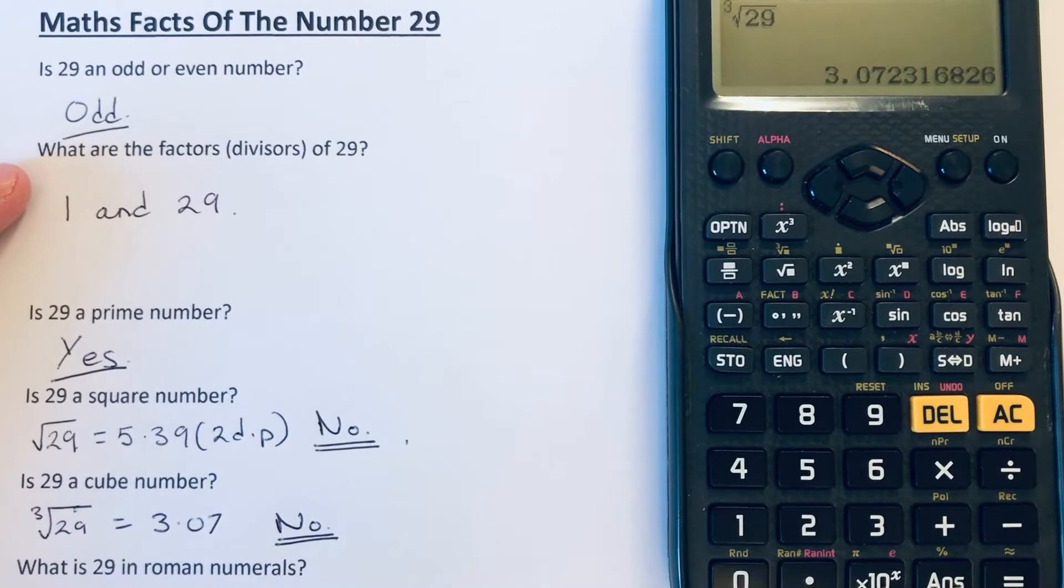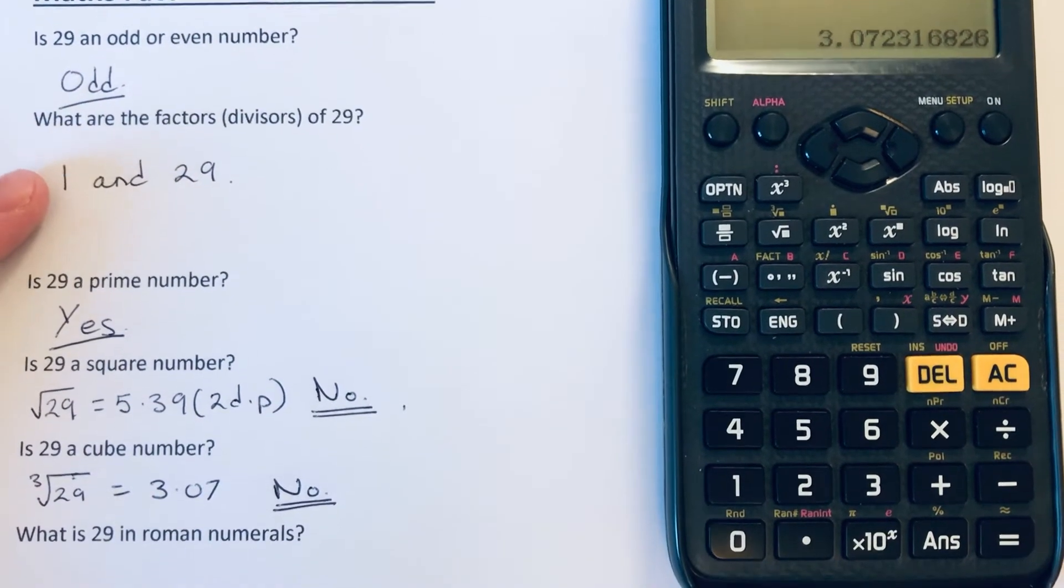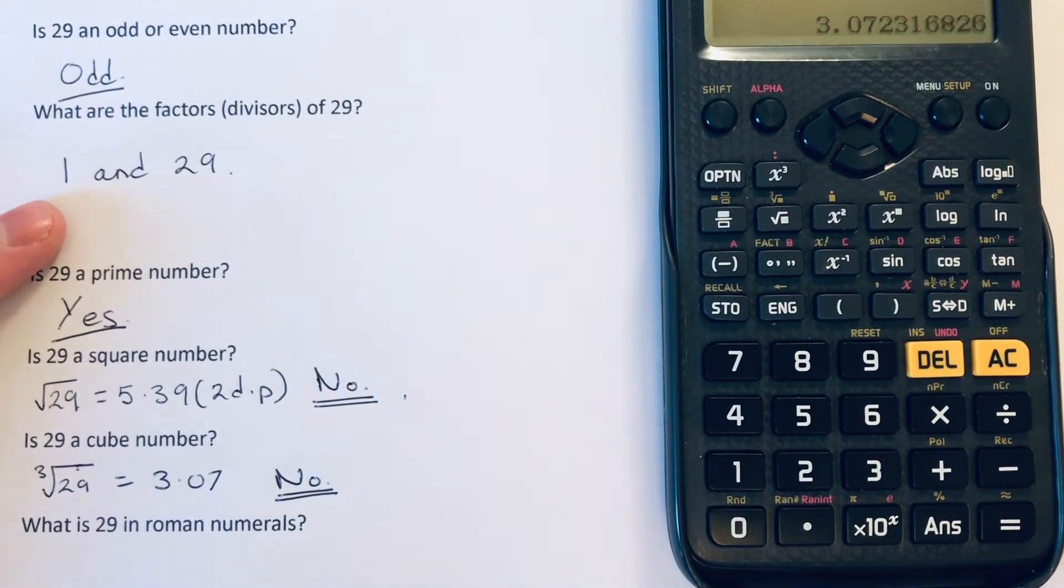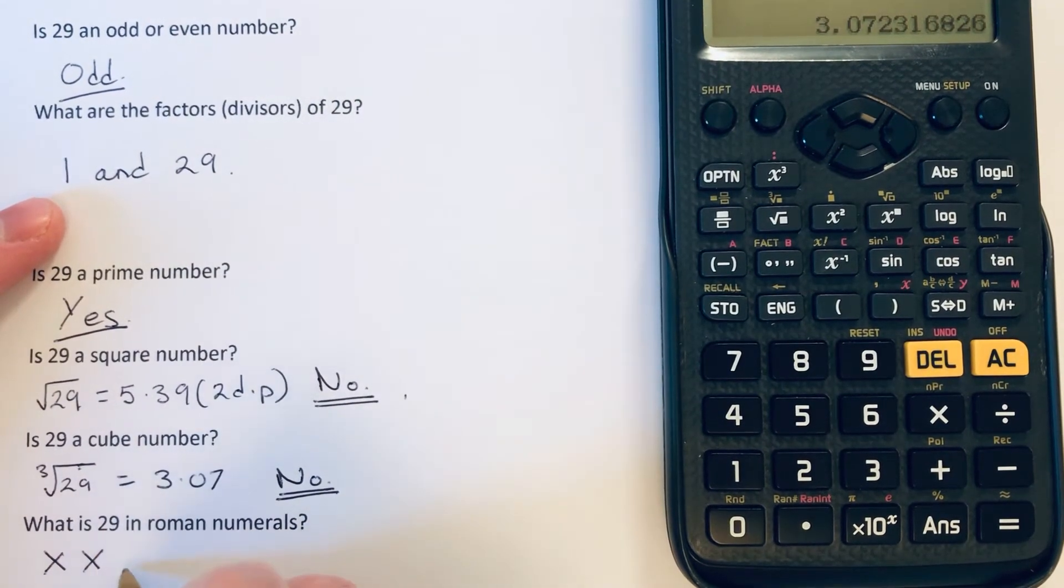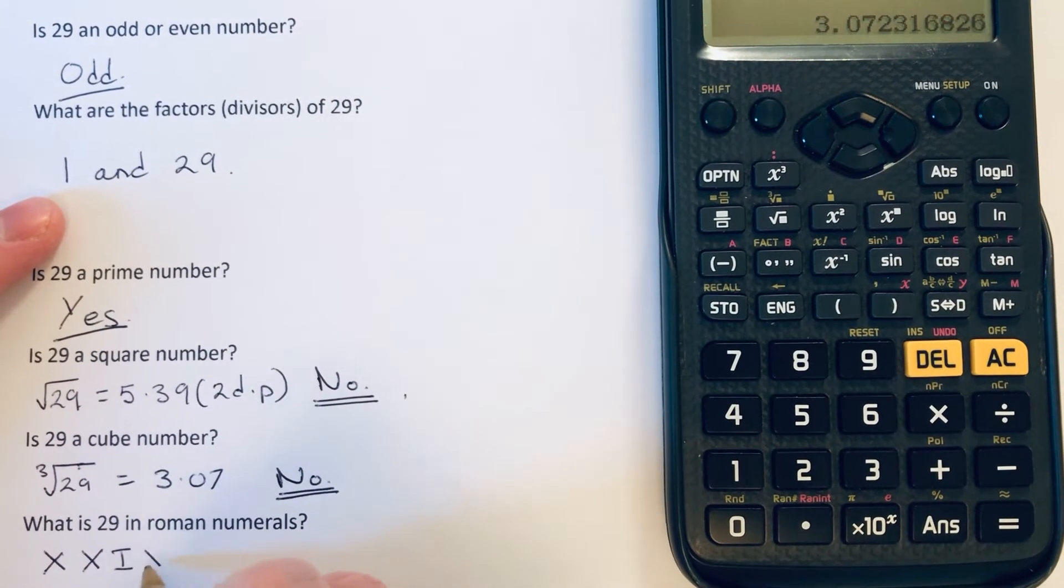And what is 29 in Roman numerals? So we can write this as X, X, I, X.